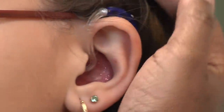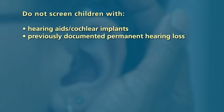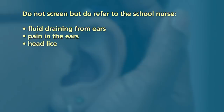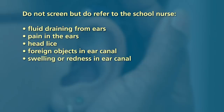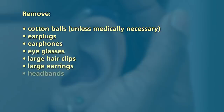There are some children who should not be screened. If the child has hearing aids or cochlear implants, or a permanent hearing loss that has already been diagnosed, the child should not be screened. If the examiner notices fluid draining from the ear, the child complains of pain in the ears, or the screener notices head lice, the child should be referred to the school nurse and not screened. If foreign objects, swelling, or redness of the ear canal are noticed, the child should also be referred. If the child has cotton balls, ear plugs, or earphones in their ears, they should be removed — first ask if cotton balls are due to an ear infection, and check if earphones are part of an amplification system. Ask students to remove eyeglasses, large hair clips, large or dangling earrings, or headbands. Small earrings should not be a barrier to a snug fit.